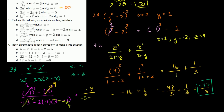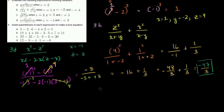Minus of a negative is a plus, so the denominator becomes negative 3 plus 8, which is 5. The full expression is negative 8 over 5, or minus 8 fifths.